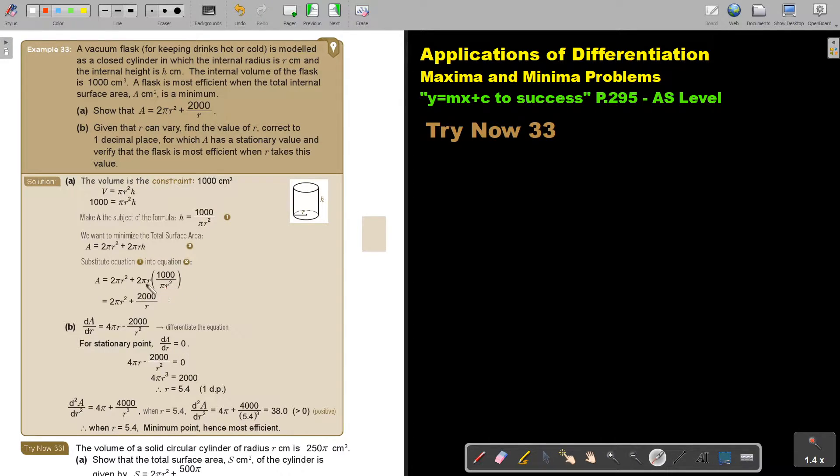Then simplify, the pi cancel out, one of the R's cancel out. And 2 times 1000 is 2000. Now there is the formula. Now given that R can vary, find the value of R, correct to one decimal place, for which A has a stationary value, and verify that the flask is most efficient when R takes this value.